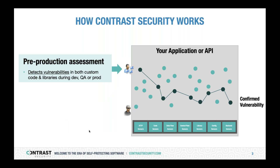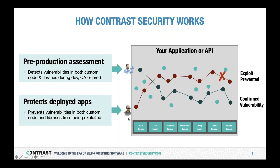We have these different sensors. In pre-production, these sensors are used for assessment, but in production applications we focus on the dangerous requests going through the application. Using these sensors, when we notice that requests are trying to change the meaning of a query, we block it right before it accesses the database. This is different from a web application firewall, which blocks attacks based solely on HTTP traffic. The Contrast agent can see what's inside the app, which really helps with SQL injection, command injection, and untrusted deserialization attacks.